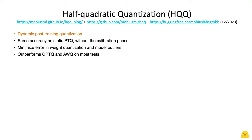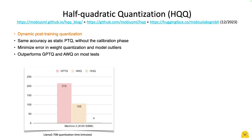The math is in the blog post, but the key element is HQQ minimizes the quantization error by looking at weights, not at activations, and it also takes care of model outliers. HQQ does outperform GPTQ and AWQ on most tests. One obvious area where it outperforms is the time it takes to quantize models, because it is dynamic quantization with no calibration step. On an A100, it takes a little more than four hours to quantize LLAMA2 70B with GPTQ, about an hour and a half for AWQ, and just four minutes for HQQ.